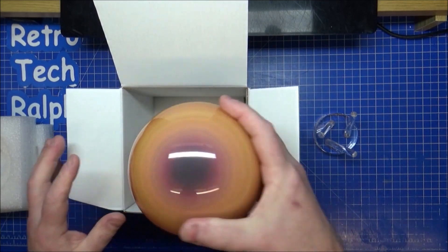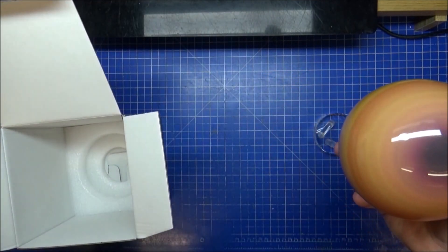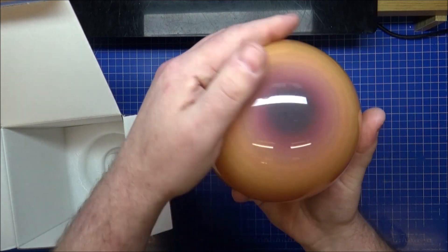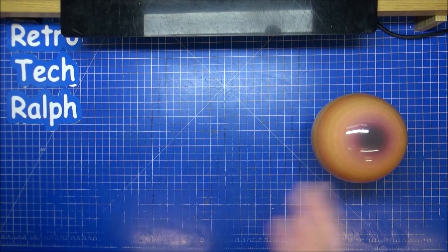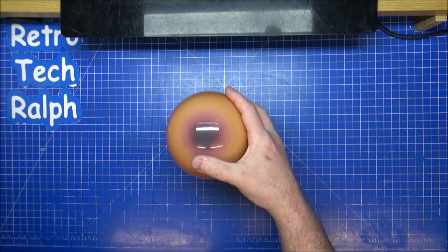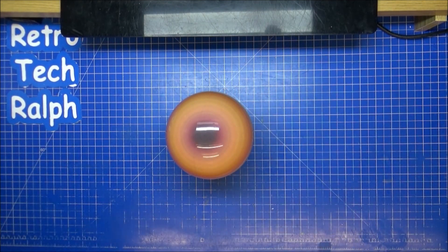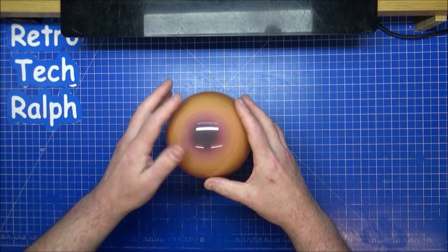Now, the only disappointing part about Saturn is there's not that much detail on this. However, there's a lot of rings, but not the rings that we're wanting to see.